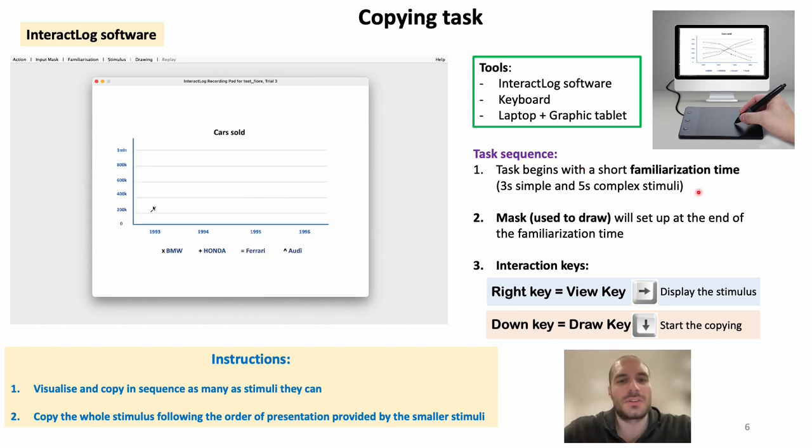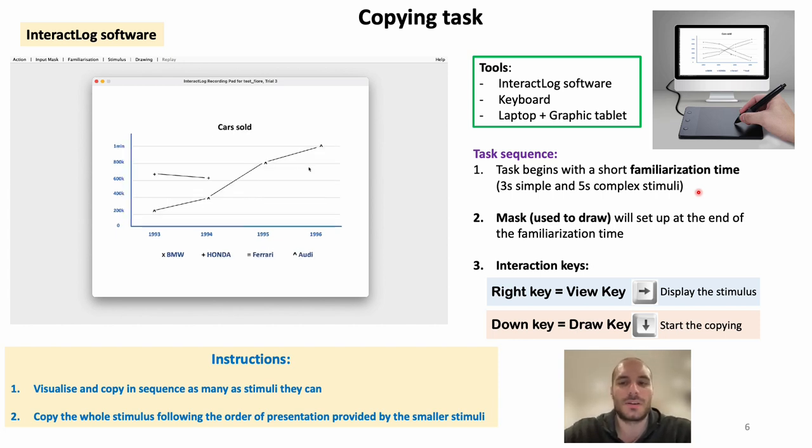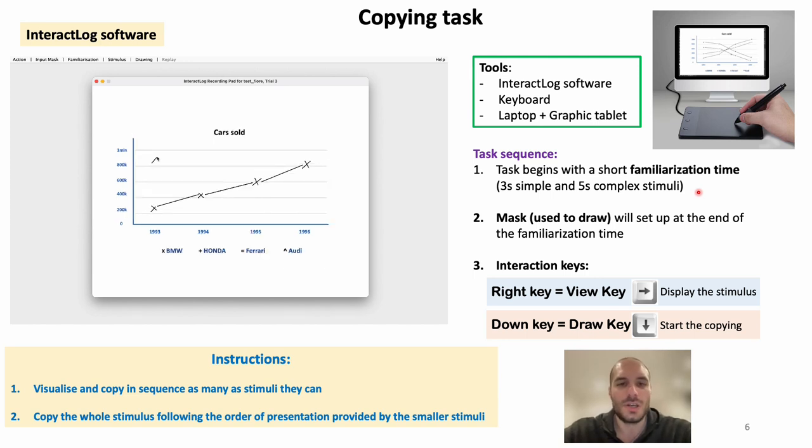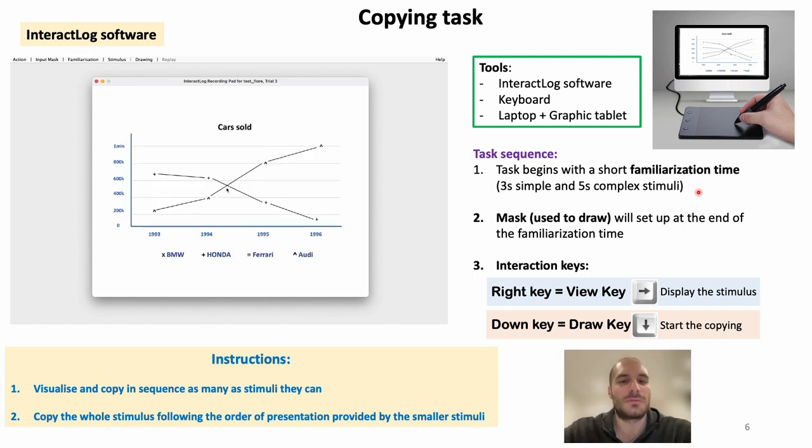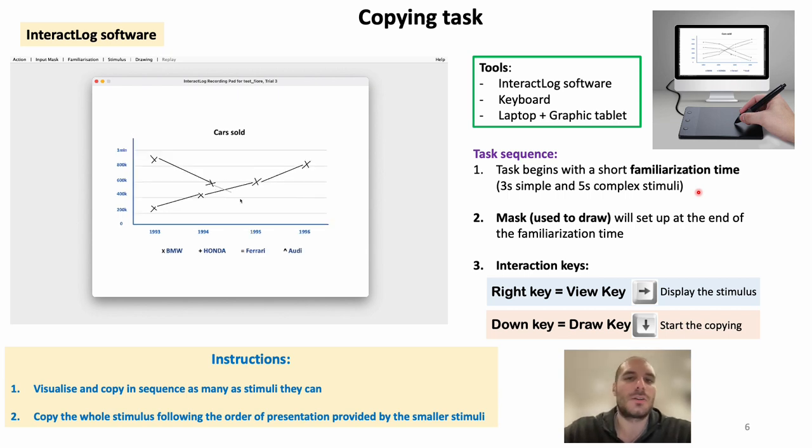The TIPS user interaction has been designed around two main phases. The familiarization phase at the very beginning, where participants can look at the stimulus for three or five seconds based on complexity. And the visualization phase, where participants have to visualize several parts from the whole stimulus by pressing the view key, which corresponds to the right key on the keyboard. Once they have displayed the amount of information they are able to copy in one go, they can start copying by pressing the draw key, which is the down key on the keyboard.